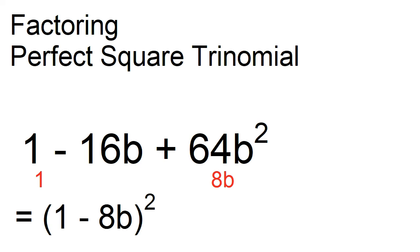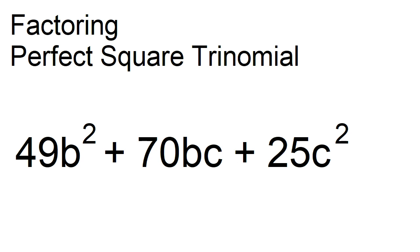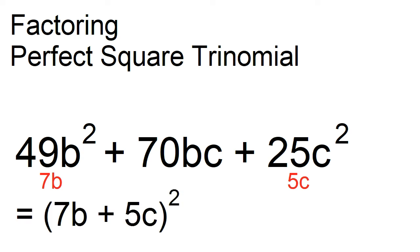Factor 49b squared plus 70b plus 25c squared. 49b squared plus 70b plus 25c squared is equal to the square of the quantity 7b plus 5c.